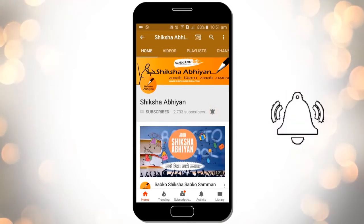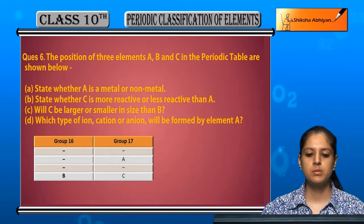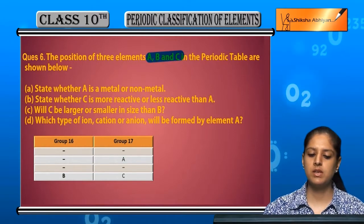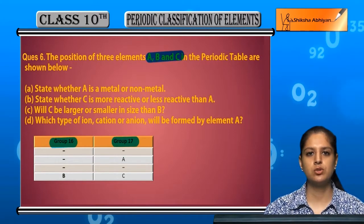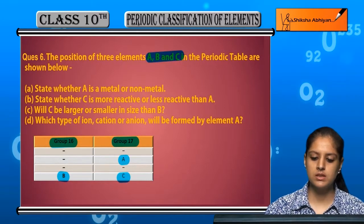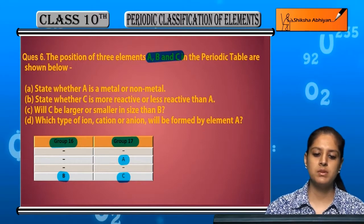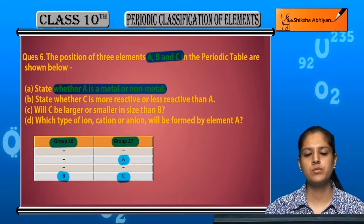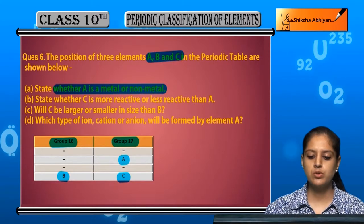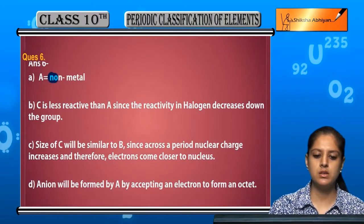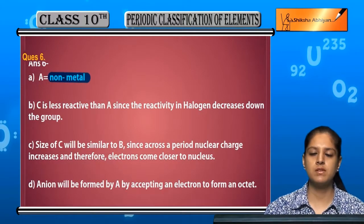Question number six: the position of three elements A, B, and C in the periodic table are shown. Two groups are given: Group 16 and Group 17, with A, B, and C as three elements. We have to tell whether A is a metal or non-metal. Because A is in Group 17, A is obviously a non-metal — Group 17 elements are non-metals.